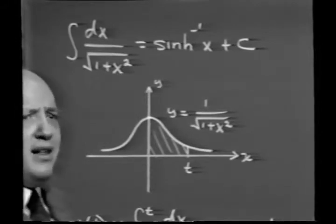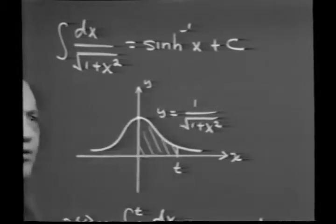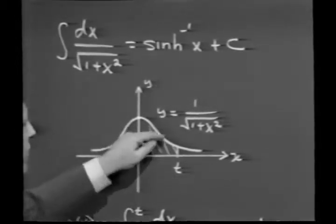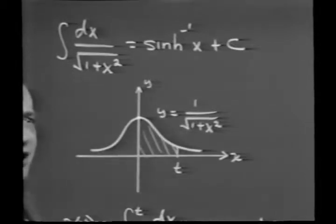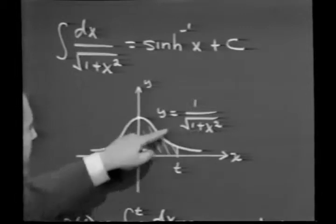Now, what does this mean geometrically? Suppose we take the curve y equals 1 over the square root of 1 plus x squared. Without beating this thing to death, it should be fairly straightforward at this stage of the game that the graph of this function can be obtained.